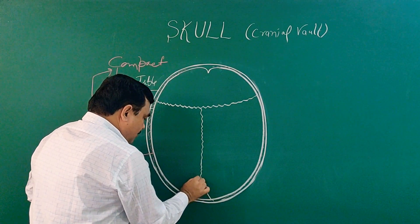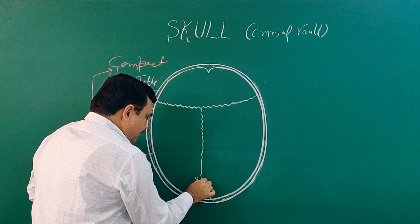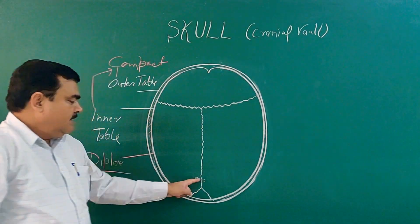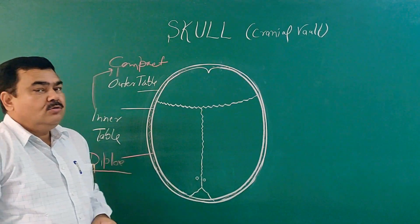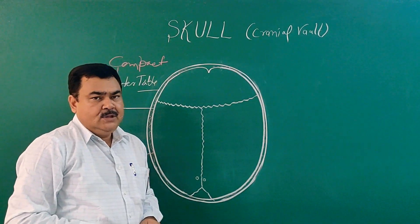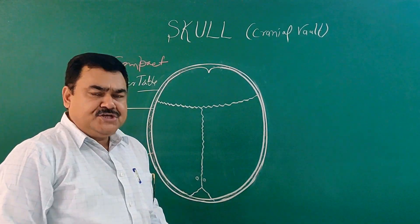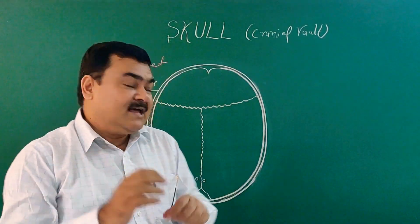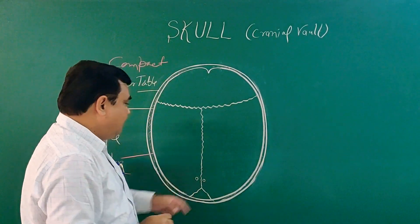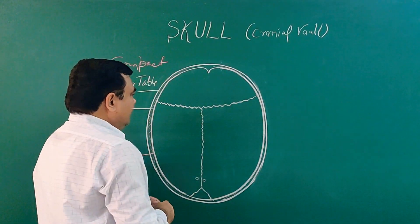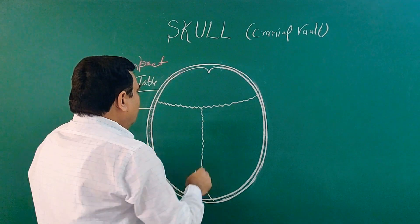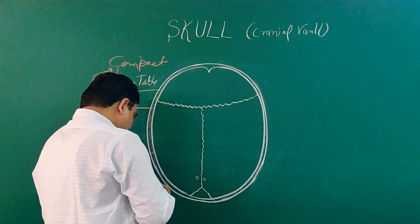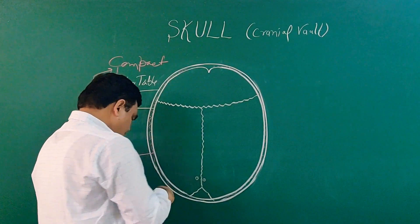About 2.5 centimetres anterior to lambda, there are two parietal foramina through which emissary veins pass.